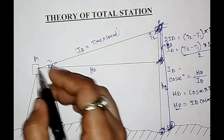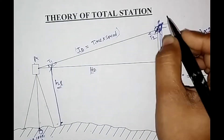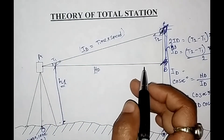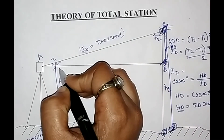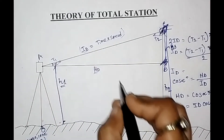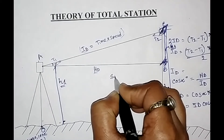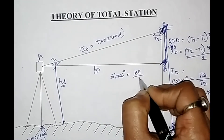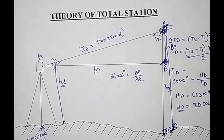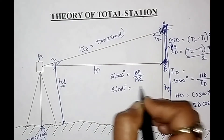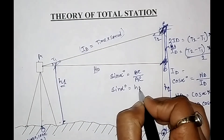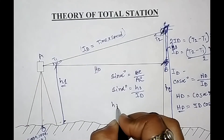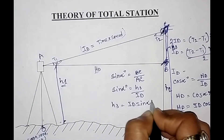A triangle is formed with vertical angle alpha. Using trigonometry: sin(α) = BC / AC = H3 / ID. Therefore H3 = ID × sin(α). In this way, the total station calculates H3 — the vertical height from the instrument's horizontal plane to the target center.